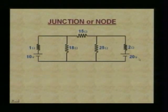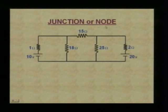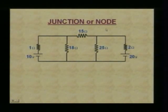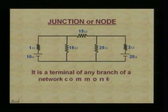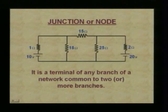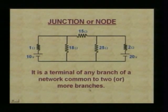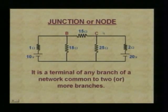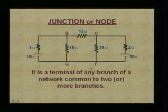Let us talk about the next one: a junction or a node. The name itself suggests that it has two or more elements connected at a point. It is a terminal of any branch or network common to two or more branches. As we can see, D is one junction, C is another, G as well as F, and likewise we have other junctions A, E, and H.